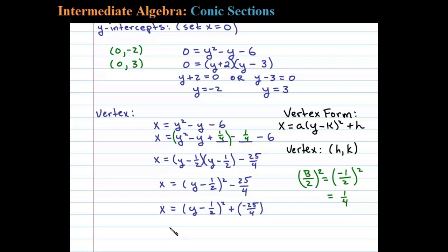Okay, so here we can see then that the vertex, the h comma k in this case, is negative 25 fourths comma 1 half.